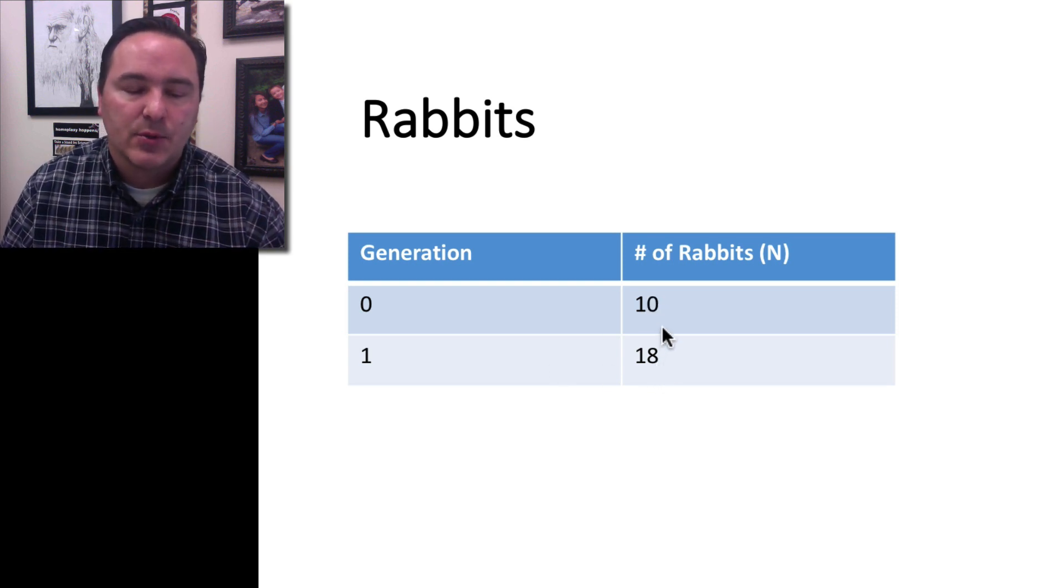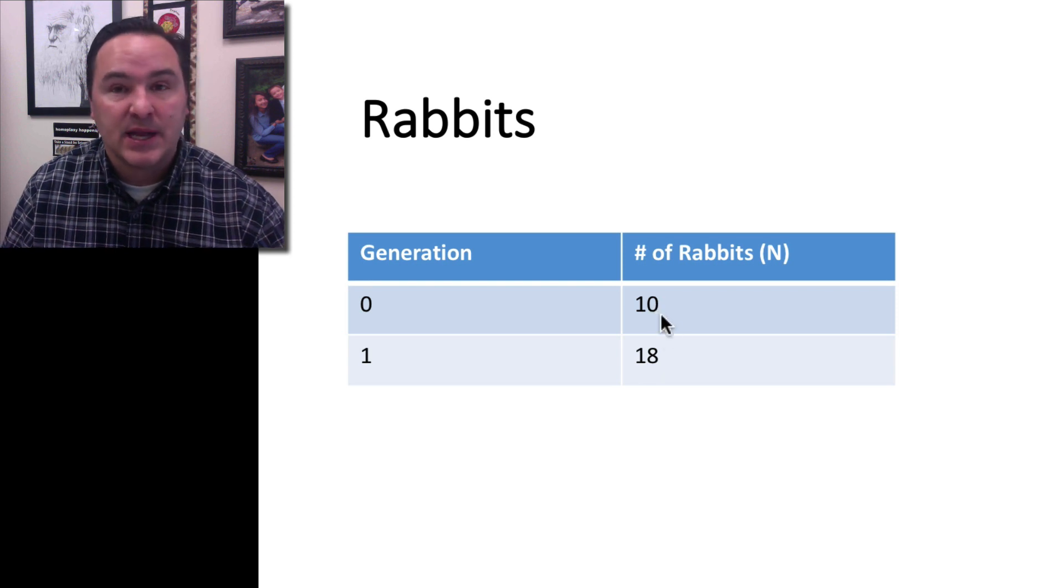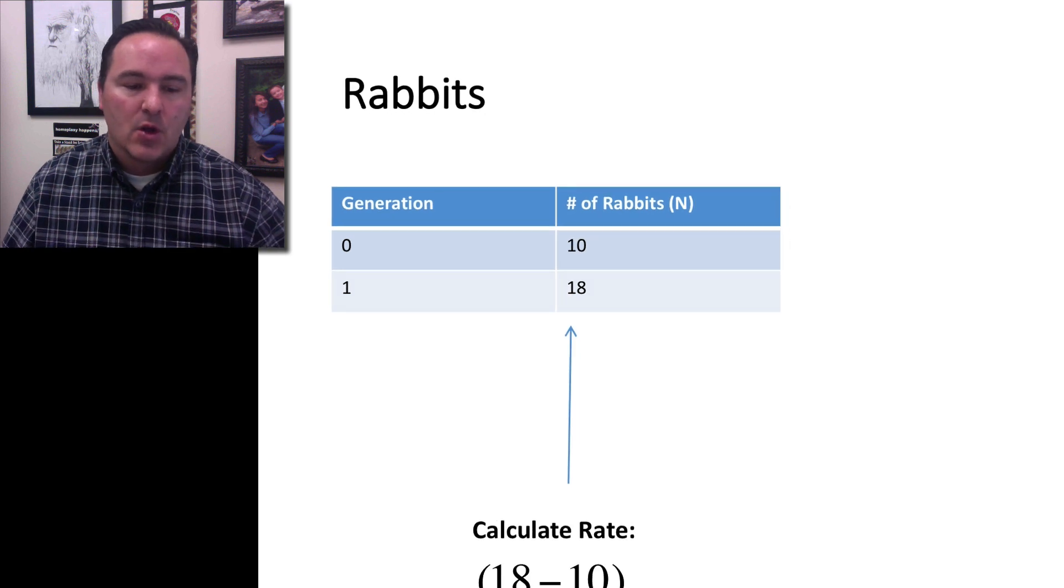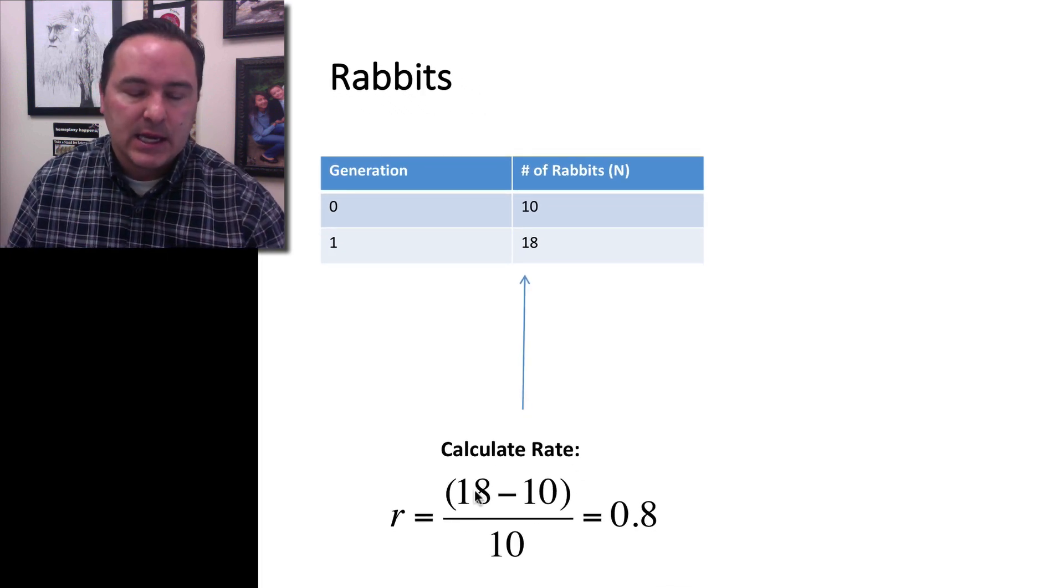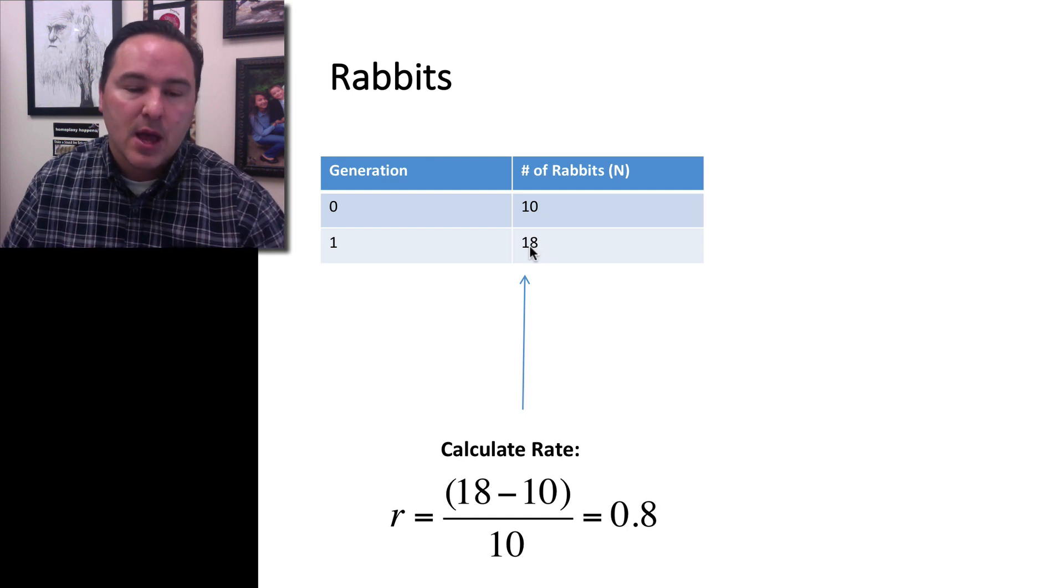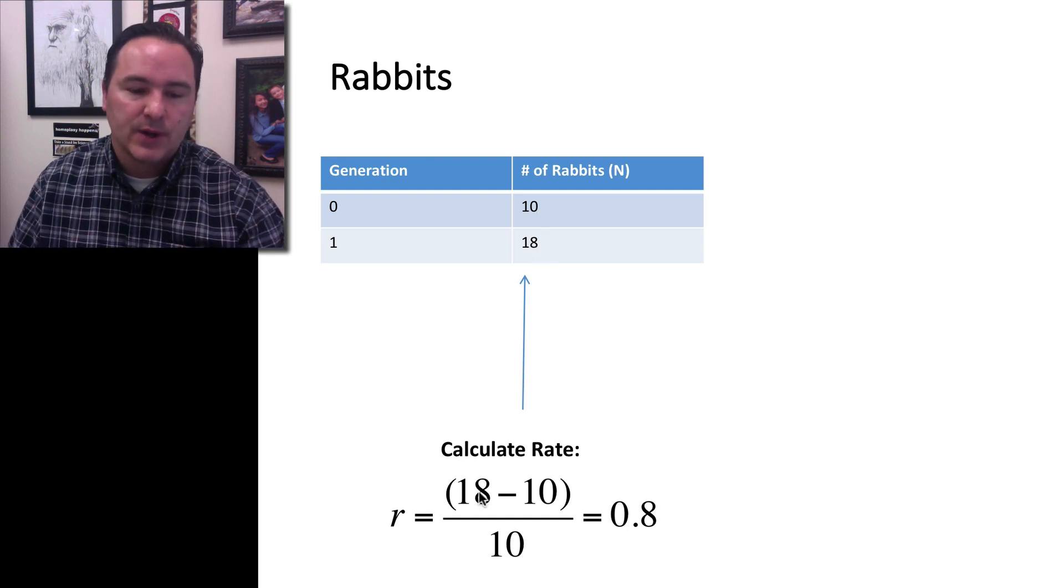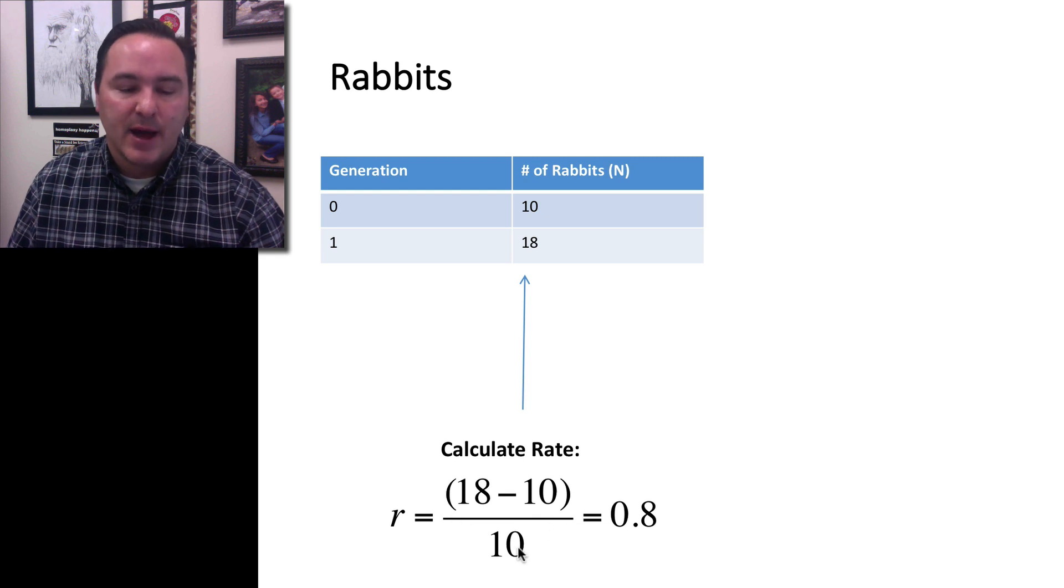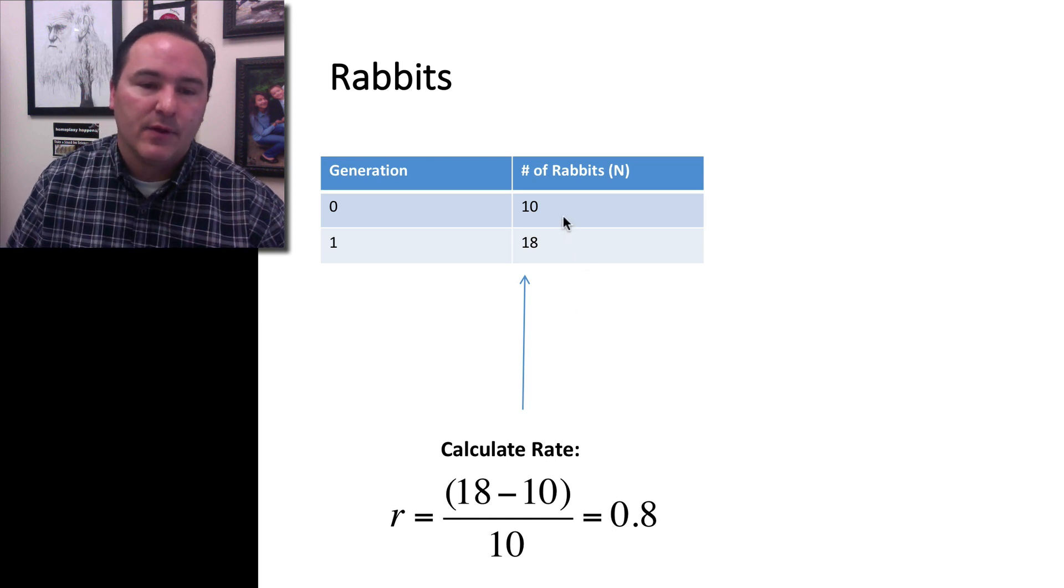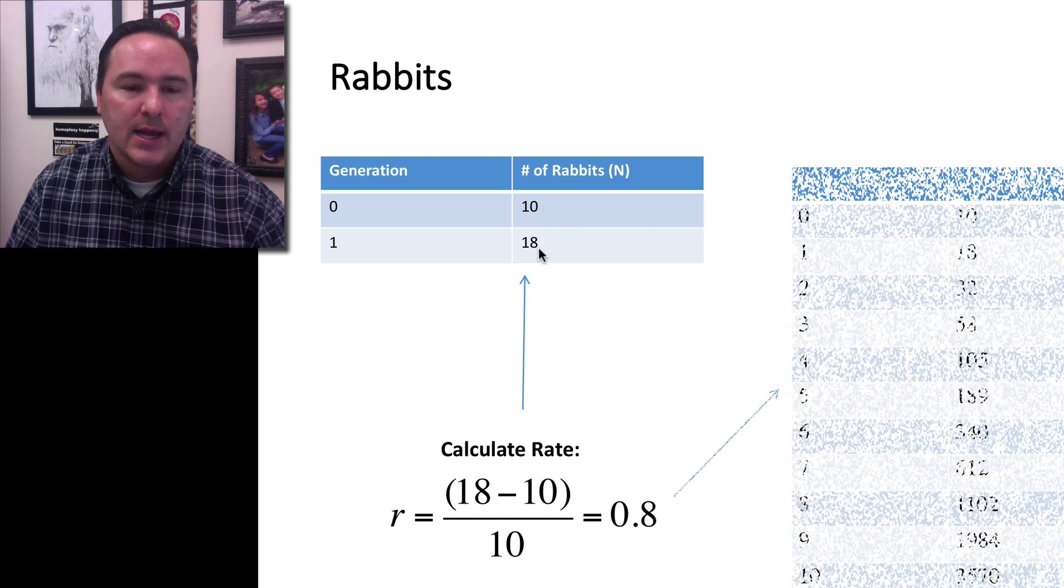So what happened? We went from 10 to 18, so that means it added 8 rabbits. We can calculate the rate from this. The rate equals 18, the current generation, minus the previous generation. So 18 minus 10 divided by the previous generation. So 18 minus 10 divided by 10, that equals 0.8. For these data, the rate is 0.8.